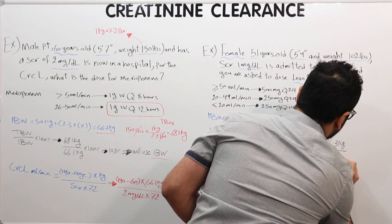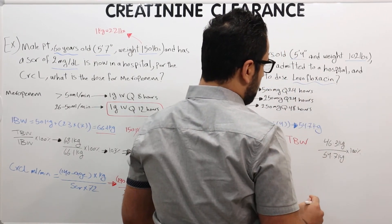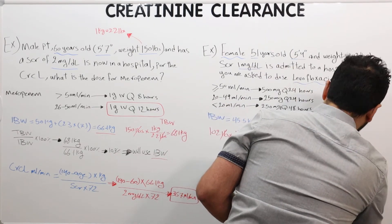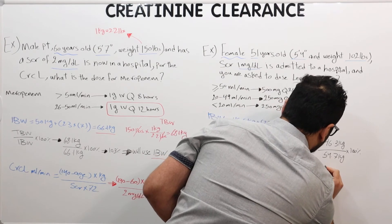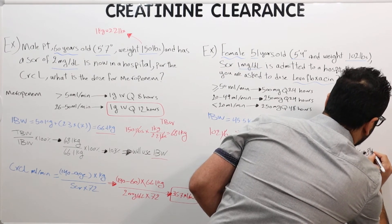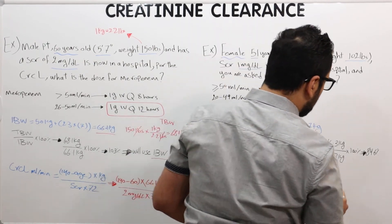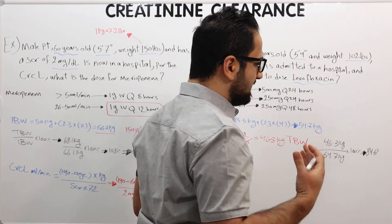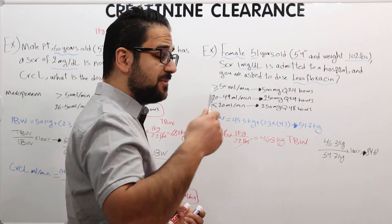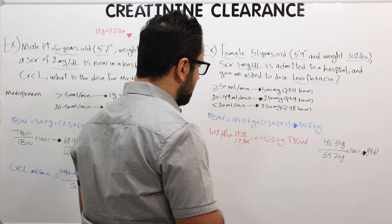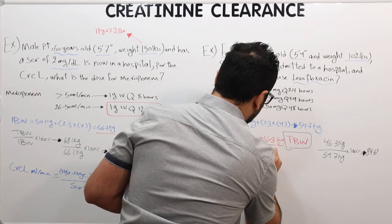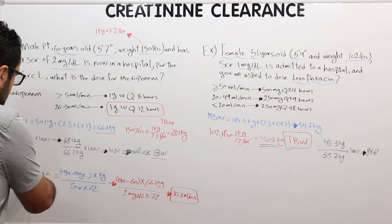The result is 84.6%. Since 84.6% is less than 89%, the patient is underweight. As discussed in the previous lecture, when the patient is underweight, we use the total body weight in the creatinine clearance equation. So we will use 46.3 kg in our calculation.